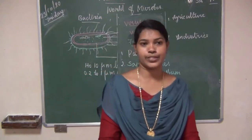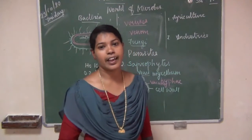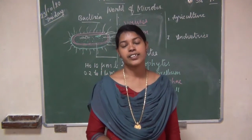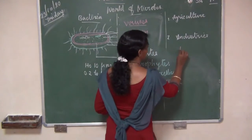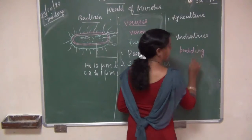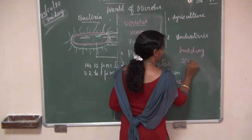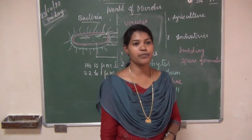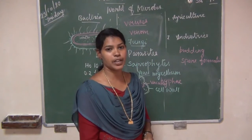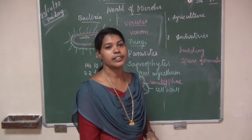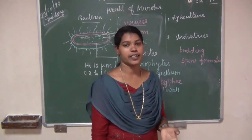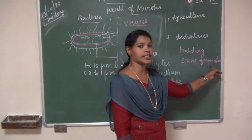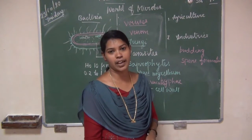How does fungi reproduce? Fungi reproduce in three ways: vegetatively (budding), asexually (spore formation), and sexually (fusion of male and female gametes).